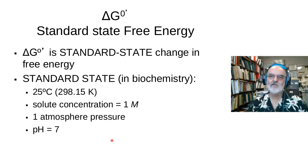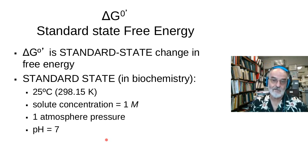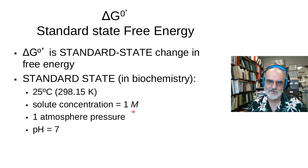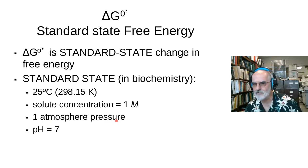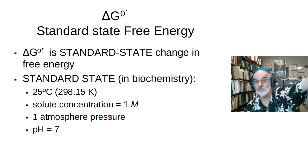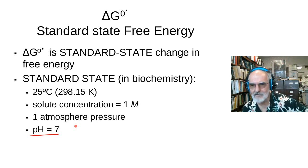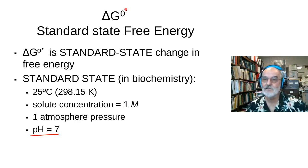We also need to define something called the standard state free energy. In biochemistry, this is usually at 25 degrees C, that's 298 degrees Kelvin, one molar concentration, and one atmosphere of pressure. Most biology occurs at the surface of the ocean, so approximately one atmosphere of pressure. Because it's biochemistry, we tend to talk about things at neutral pH — that's indicated by the dagger symbol on delta G.